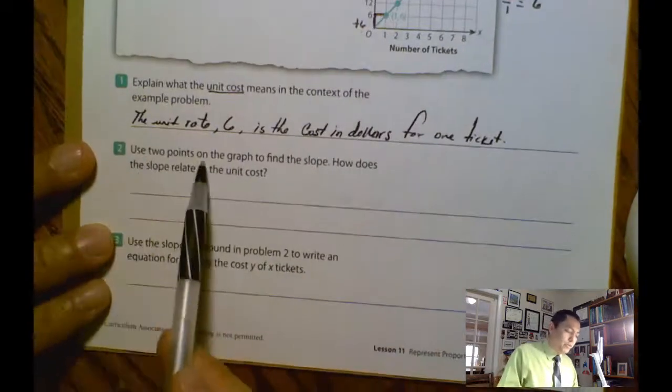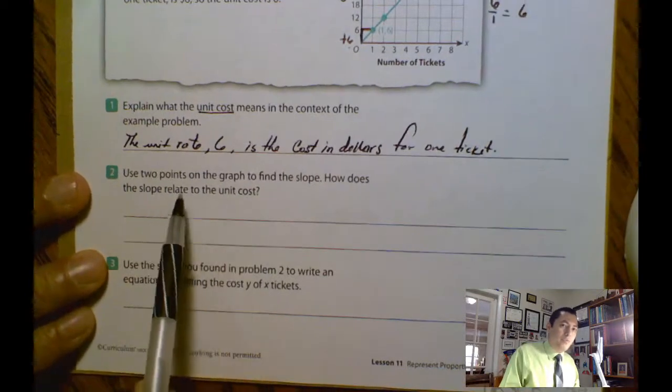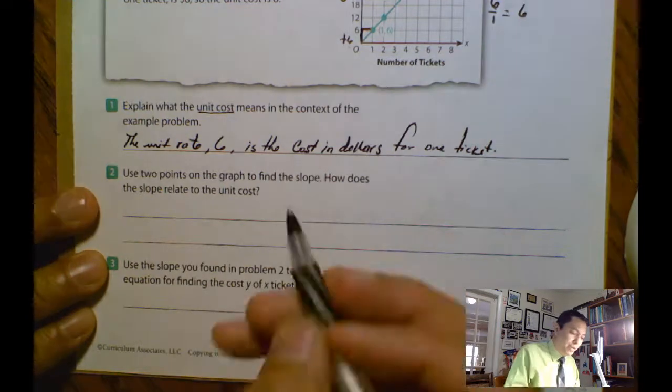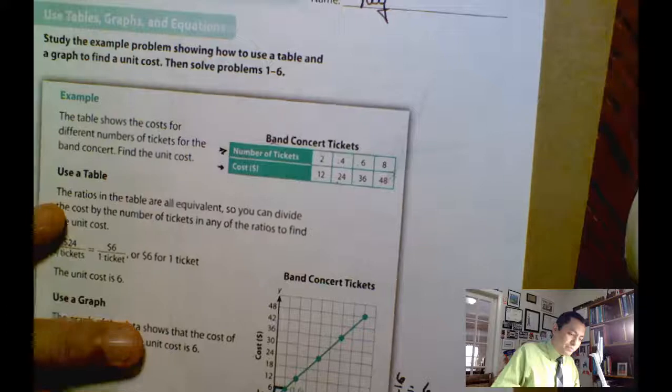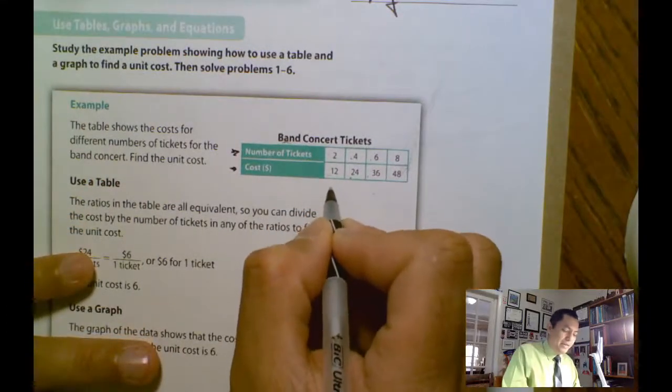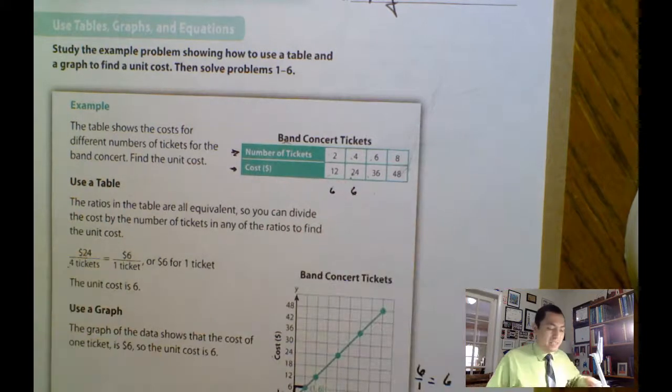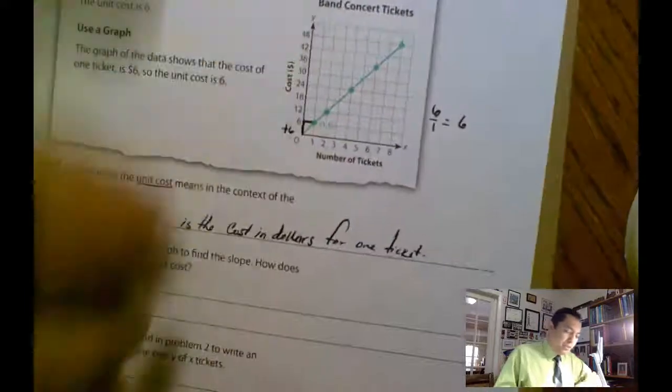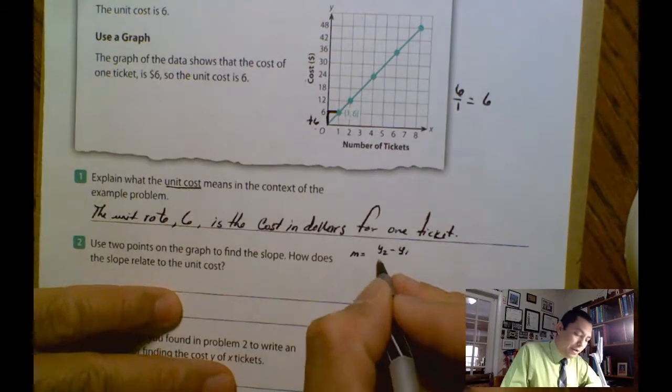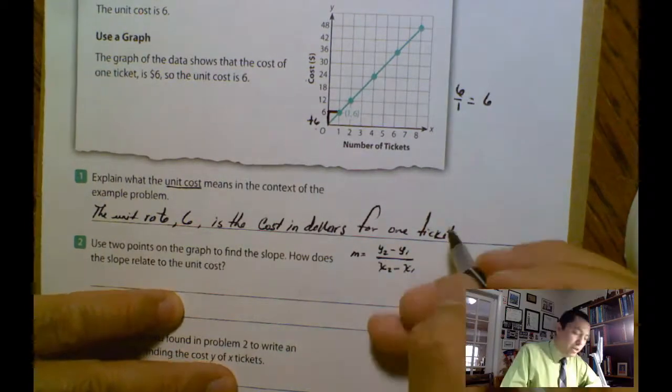Number two, use two points on the graph to find the slope. How does the slope relate to the unit cost? So in this case, use two points. You find two points here. 12 divided by 4 is 6. 24 divided by 4 is 6. So the slope in this case is 6. Remember, we can use the other formula. m equals y2 minus y1 over x2 minus x1.